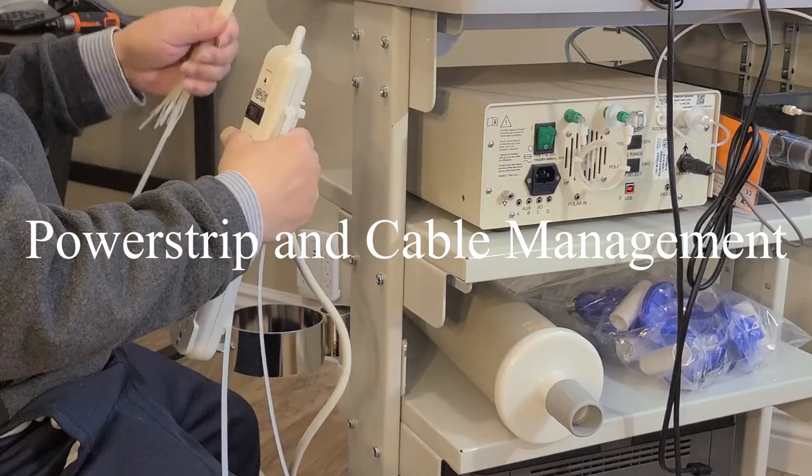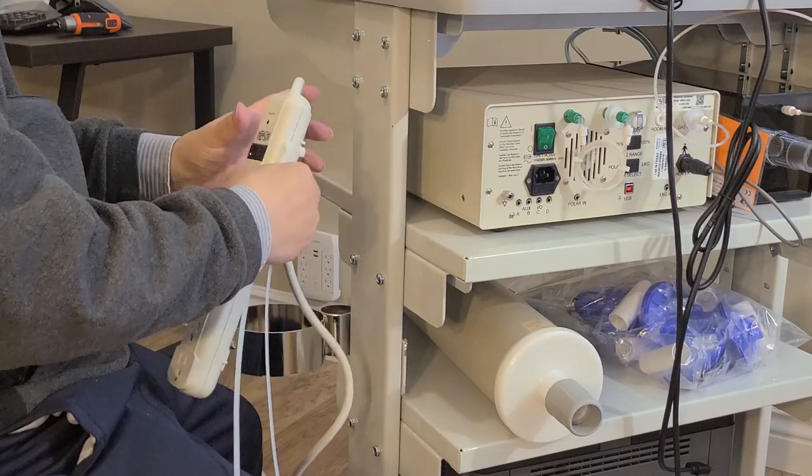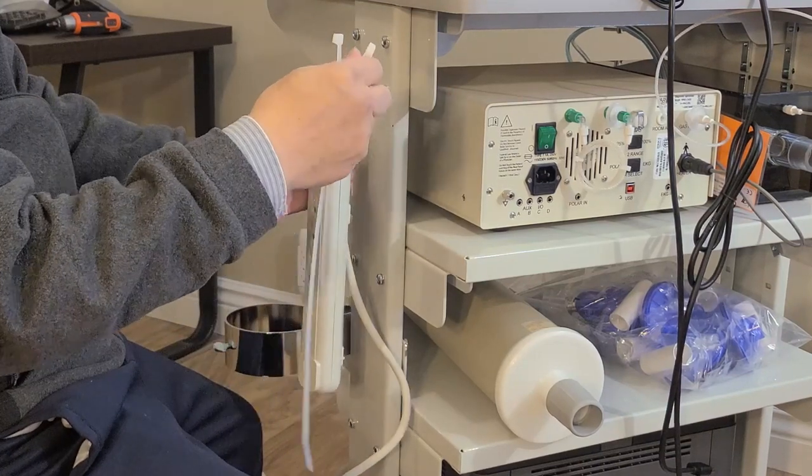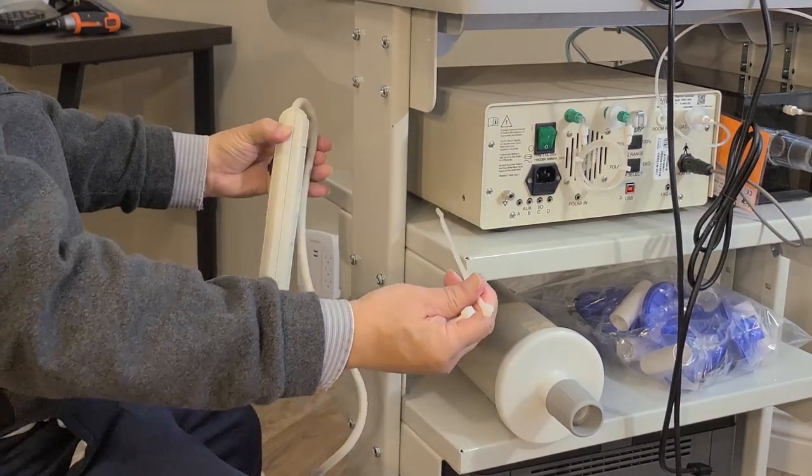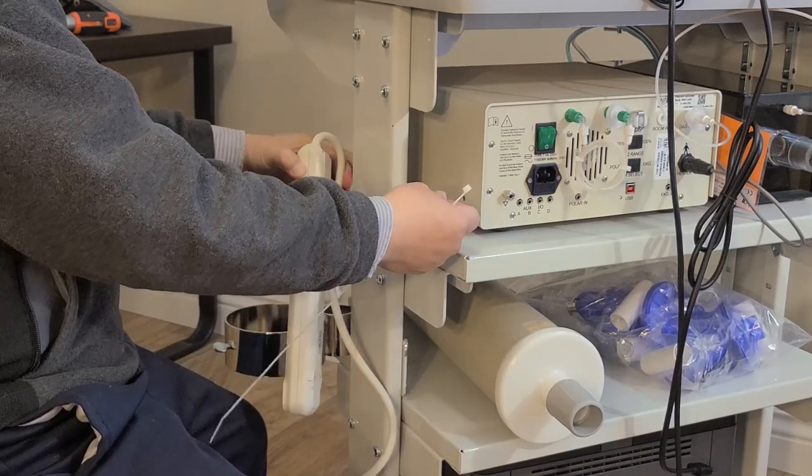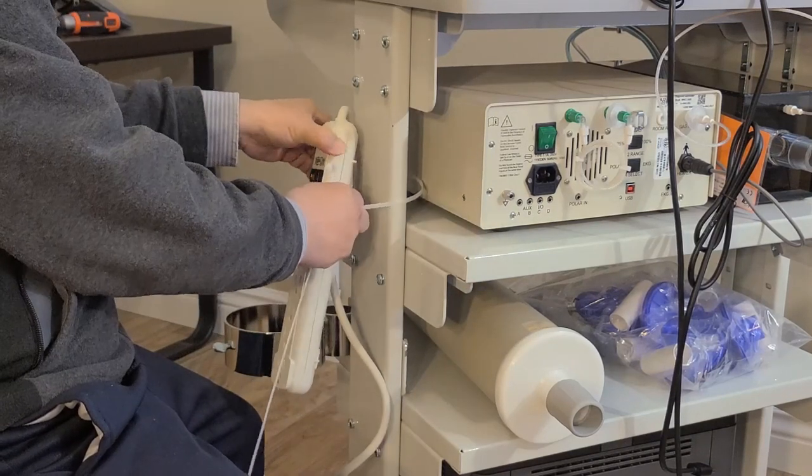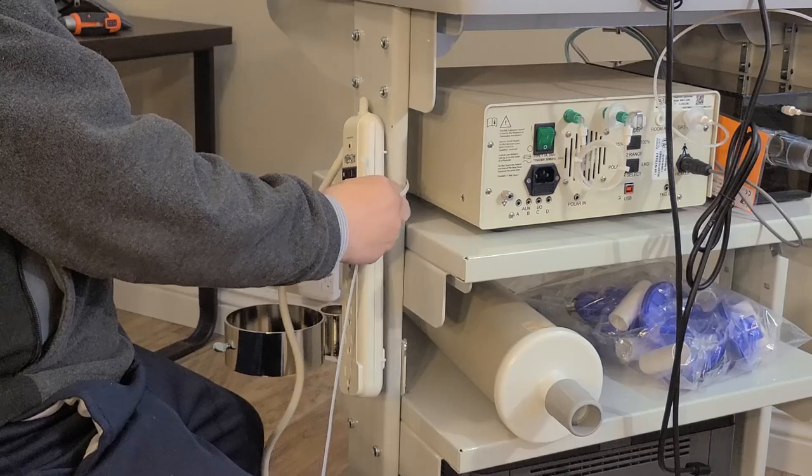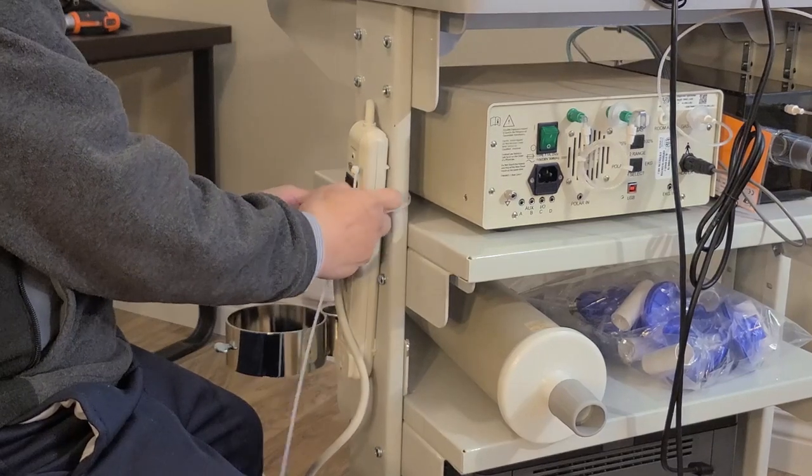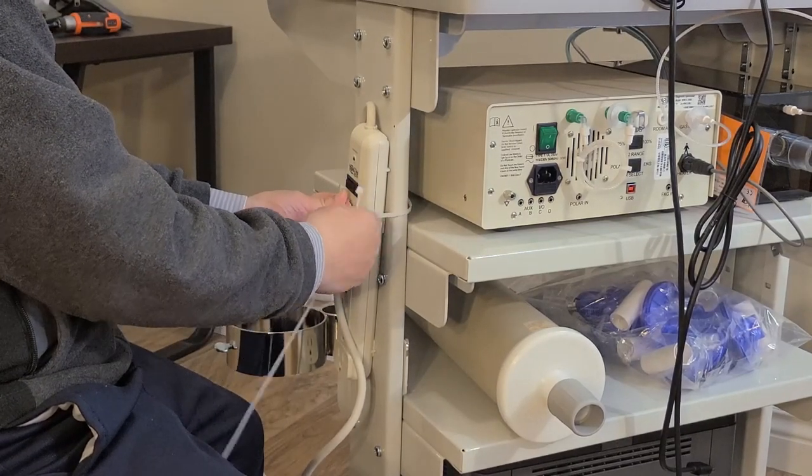Next, we are going to tie the power strip on the side panel. You find the longest nylon tie and you tie it right under the power strip.